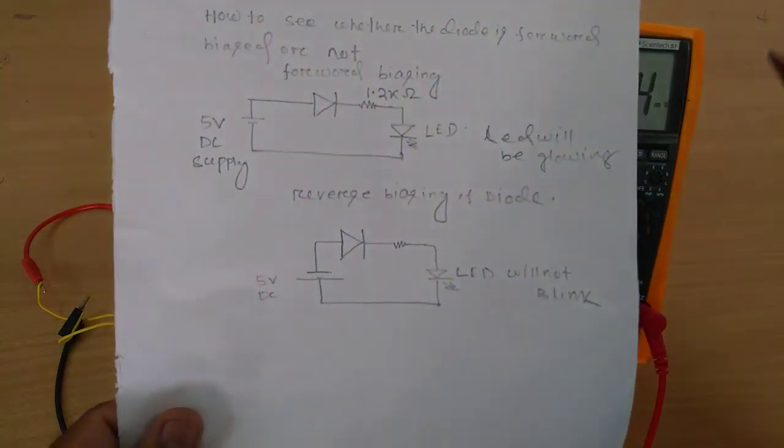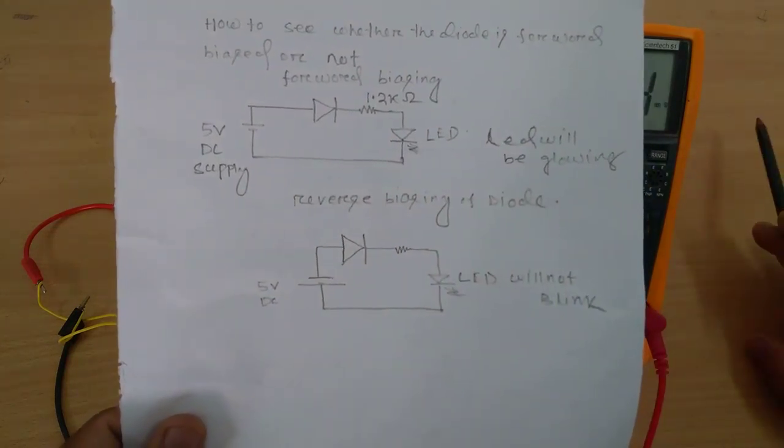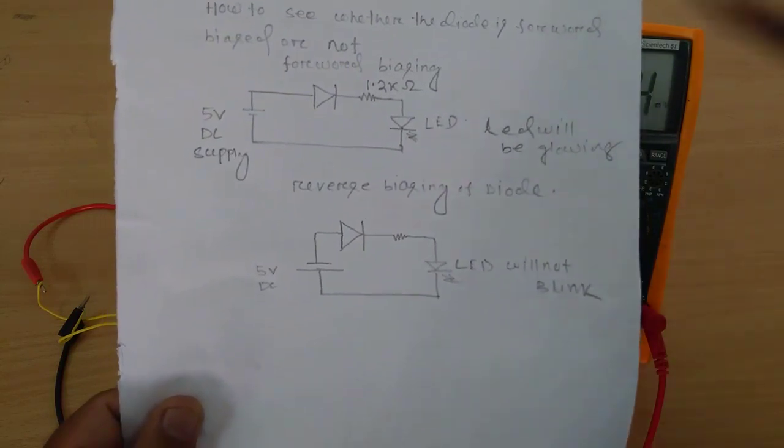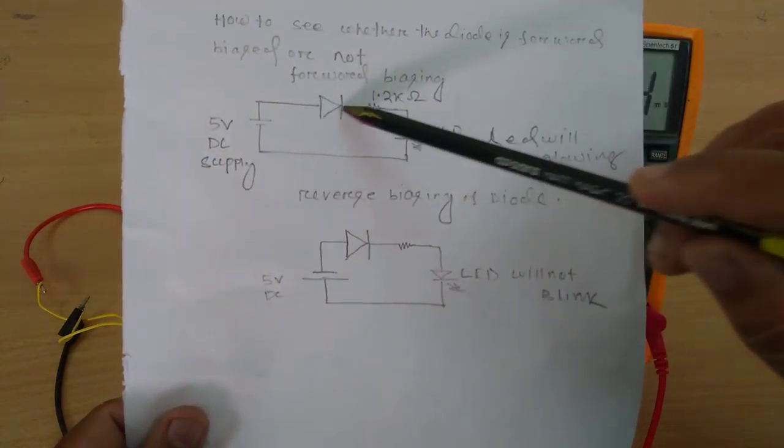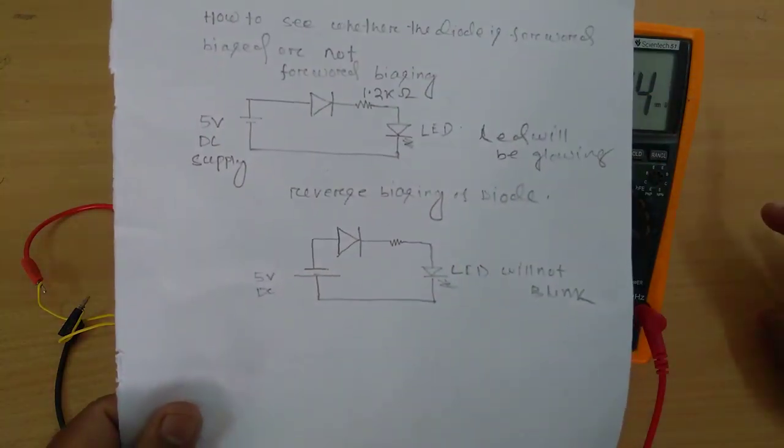If the LED will not glow if I will be changing the polarity then for sure the diode is not in forward biasing configuration because in this case the diode will conduct.